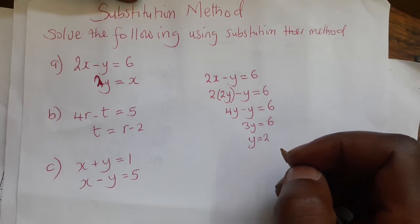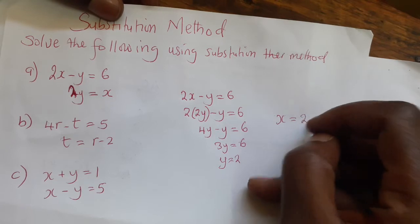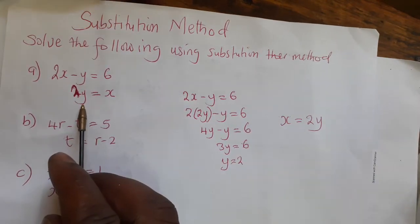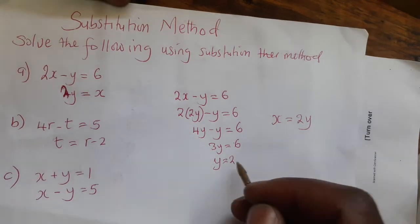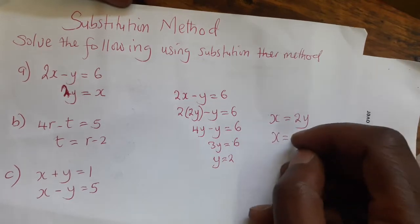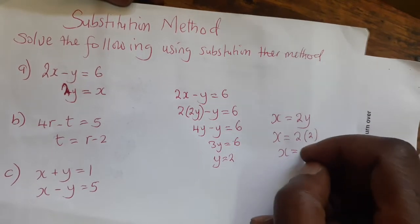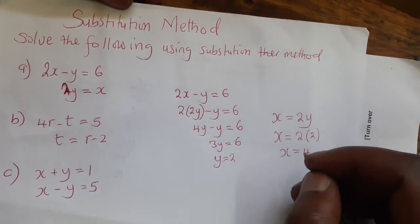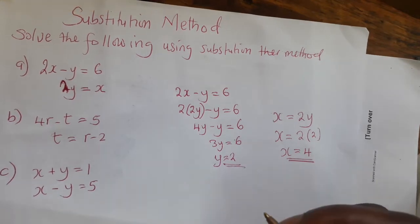Y equals 2. Then, since x equals 2y, and y has been found as 2, we say x equals 2 multiplied by 2, so x equals 4. This is our answer — it's as simple as that.